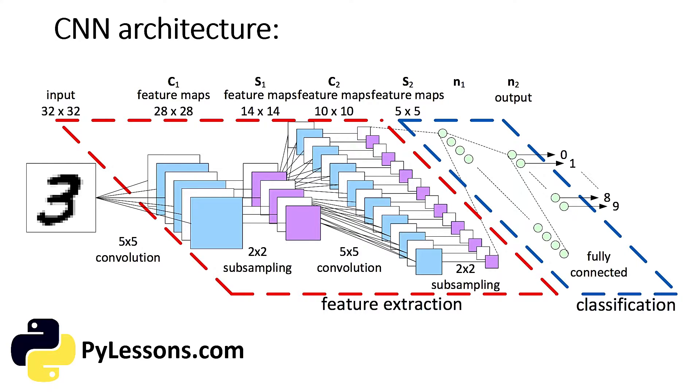First of all, the layers are organized in three dimensions: width, height, and depth. Further, the neurons in one layer do not connect to all neurons in the next layer, but only to a small region of it. Lastly, the final output will be reduced to a single vector of probability scores organized along the depth dimension.